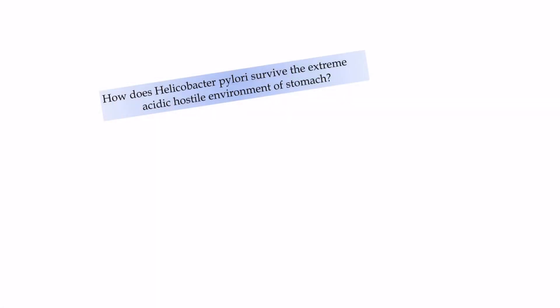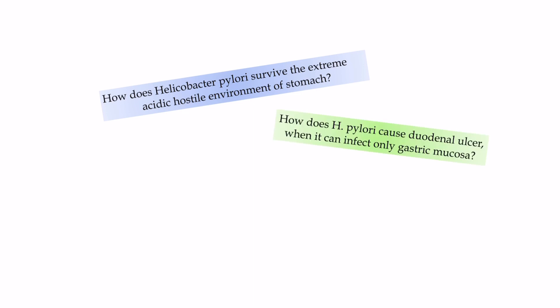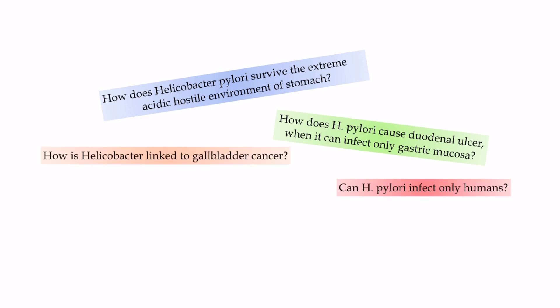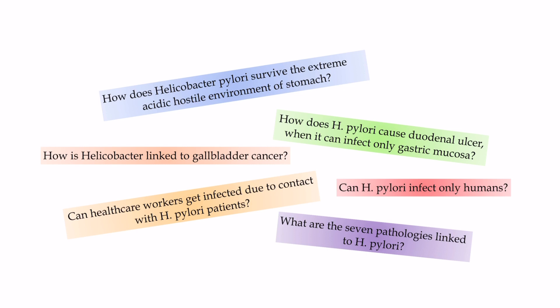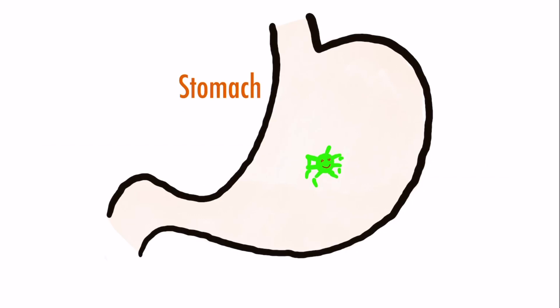How does Helicobacter pylori survive the extreme acidic hostile environment of the stomach? How does H. pylori cause duodenal ulcer when it can infect only gastric mucosa? Can H. pylori infect only humans? How is Helicobacter linked to gallbladder cancer? What are the 7 pathologies linked to H. pylori? Can healthcare workers get infected due to contact with H. pylori patients? Let us find out the answers in this video.